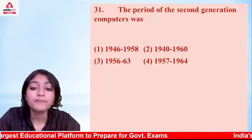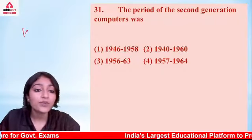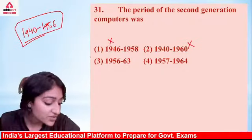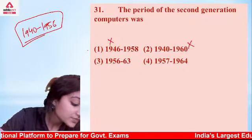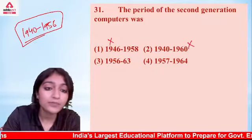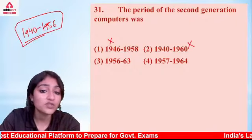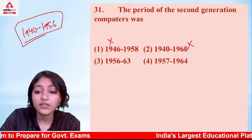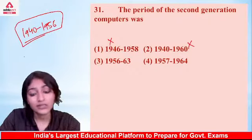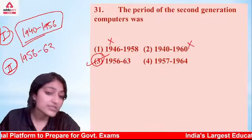The period of the second generation computer was which? First generation was 1940 to 1956. Second generation — the answer is option number 3: 1956 to 1963. Absolutely correct.